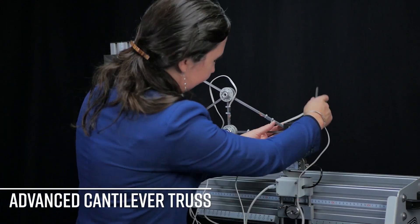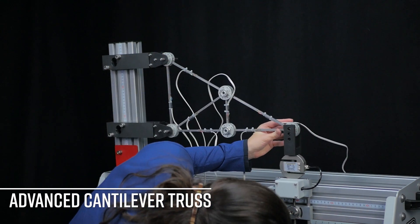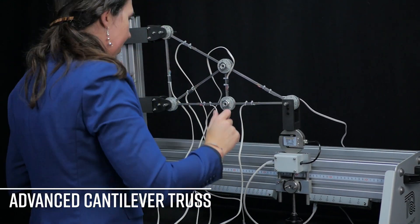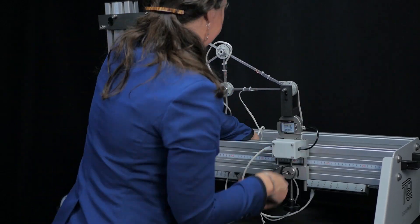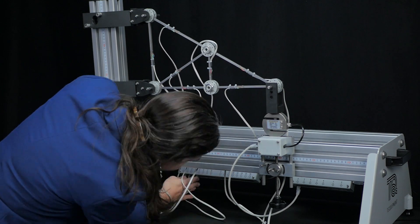The second truss is the advanced cantilever truss, following the same experiment process this time with the advanced cantilever shown here. The user guide prompts students to consider the role of members that carry zero or very little load.